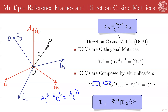The way to transform a dyadic is equivalent to a change of basis of a matrix, as you may recall from linear algebra. So if we have the components of dyadic T with respect to frame A, to get the components of that same dyadic with respect to frame B, we left-multiply by BCA and right-multiply by ACB, which is the inverse — or equivalently the transpose — of BCA.